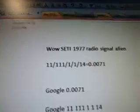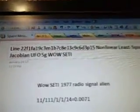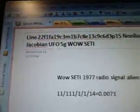Okay, so we've got Part 284C3M, 1B7C8E, 13C9C6D, 3P15. Line 22F1FA, 19C3M, 1B7C8E, 13C9C6D, 3P15, non-linear least squares, Jacobian, UFO, 5G, wild setting.